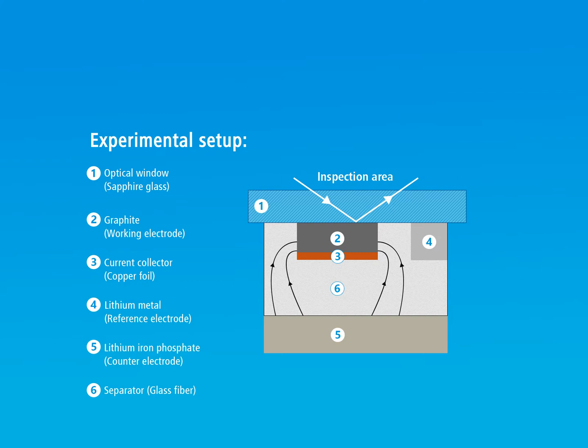Importantly, the graphite electrode is placed with the active layer pointing towards the window on top, so that the current cannot enter vertically through the copper foil, but only from the two edges of the graphite strip.